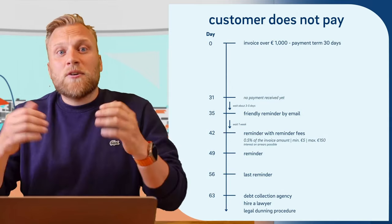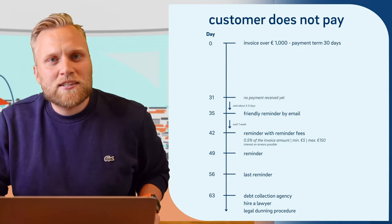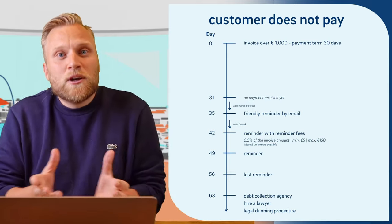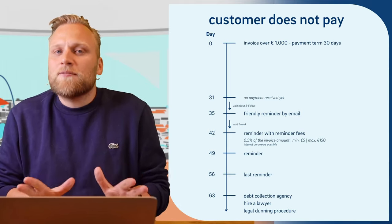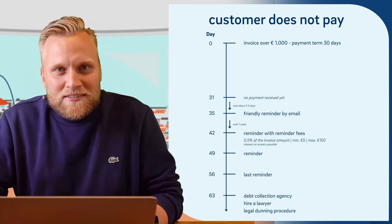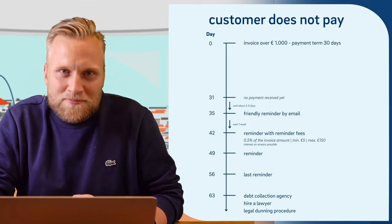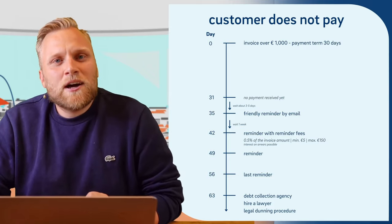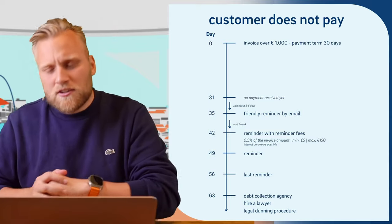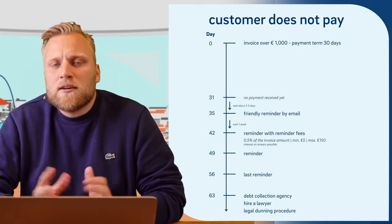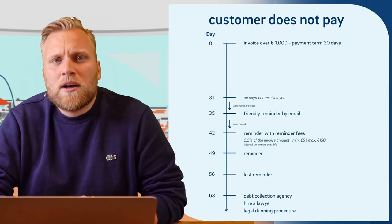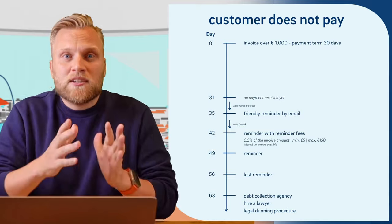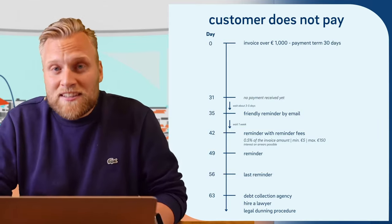Specifically, the judicial dunning procedure. You can actually initiate a court dunning procedure online — I will link the website below in the video description. A court dunning procedure ensures that your customer receives an official letter from a court in order to settle the matter, which makes the whole situation seem quite serious. If a company is your client, they will start to take action at the latest when they receive a letter from a court. Another advantage is that the statute of limitations is halted — monetary claims expire after three years, but if you have initiated a court dunning procedure, this claim does not expire after three years.